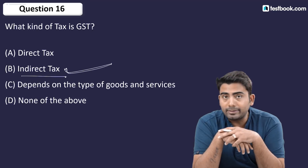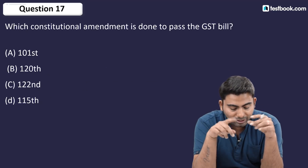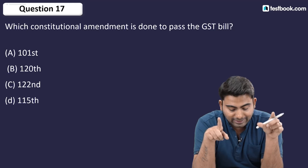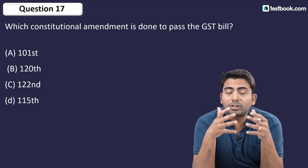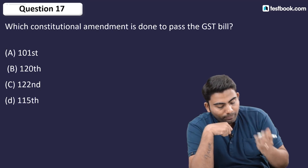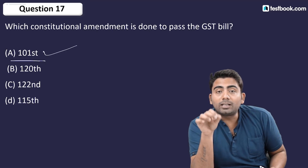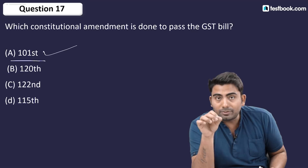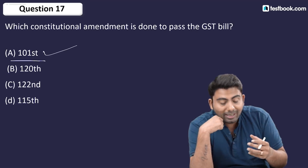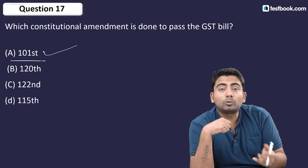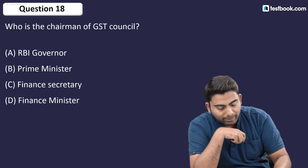Question number 17: Which constitutional amendment was done to pass the GST bill? The answer is the 101st Constitutional Amendment. If the question asks about the amendment bill number, the answer would be the 122nd Amendment Bill, but for the amendment itself, the answer is 101.